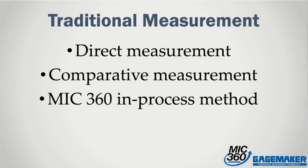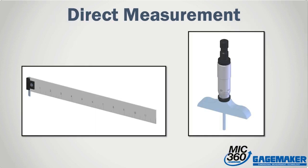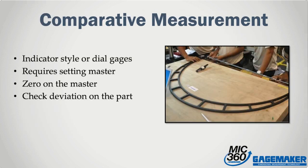So how does the MIC360 in-process method contrast with traditional methods? Everyone understands the concept of two traditional measuring techniques: direct measurement and comparative measurement. A direct measurement gauge, such as a common scale, a micrometer, or pie tape, provides the actual measurement values straight from the instrument. Comparative measurements, like those taken with bar gauges, indicator-style gauges, and other instruments that require a dedicated setting master, obtain their values by zeroing first on the setting master and then taking a reading on the part to see how far you've deviated from the master value.